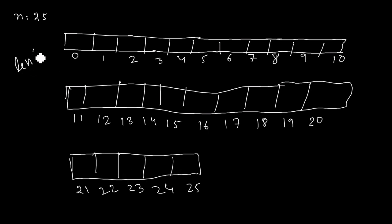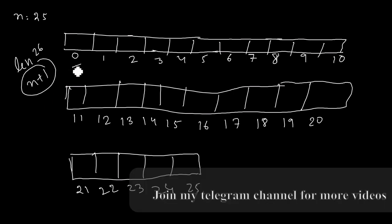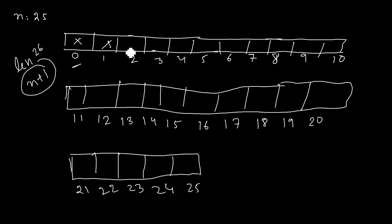We take an array of length n+1 because of 0-indexing. Initially, we mark 0 and 1 as false since they are not prime. We start with 2 — we know 2 is a prime number, so we mark it true. All multiples of 2 cannot be prime because they have 2 as a factor, so we go and mark them false.